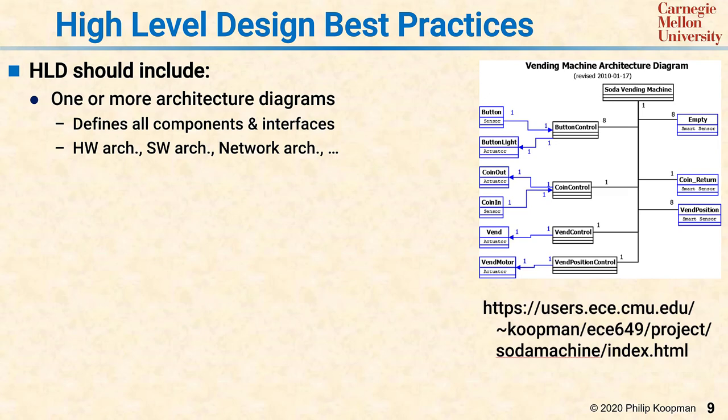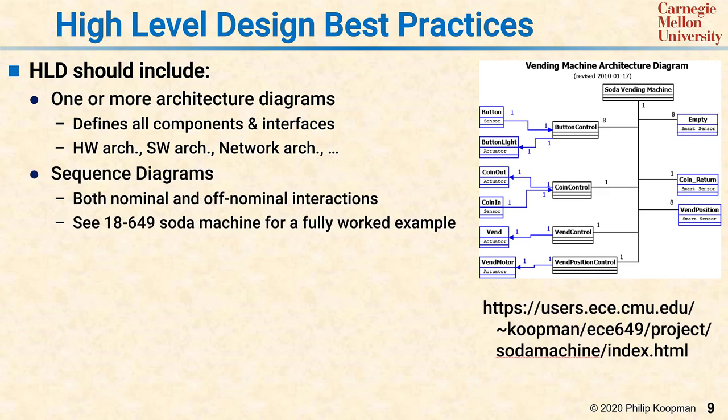The HLD should also have sequence diagrams that cover both nominal and off-nominal interactions — in other words, intended behavior, but also behavior that deals with exceptional conditions or mistakes made by users. There's a fully worked example for a soda machine available in a course archive for 18-649 that goes through the entire V process using the methods described. It's recommended to look at that for concrete examples.